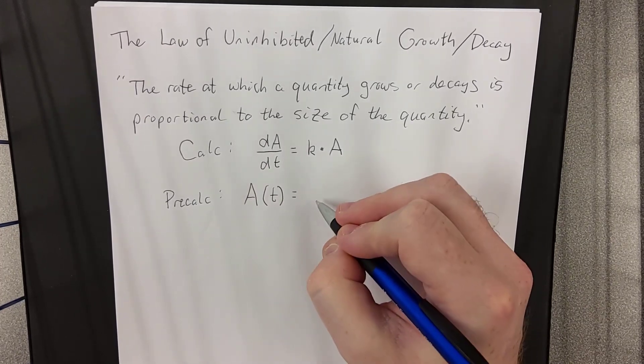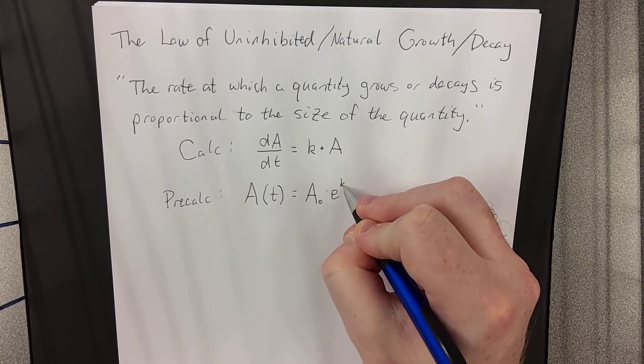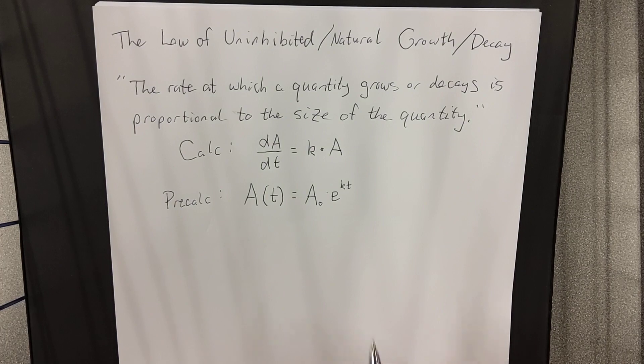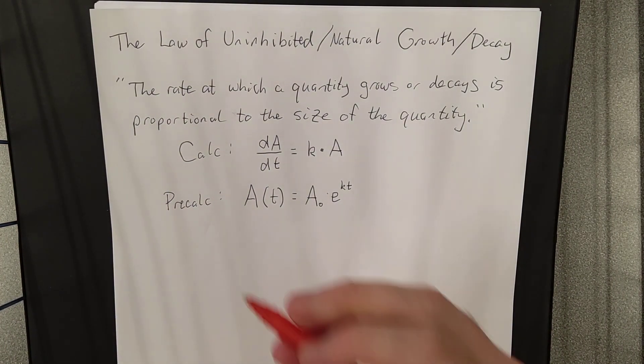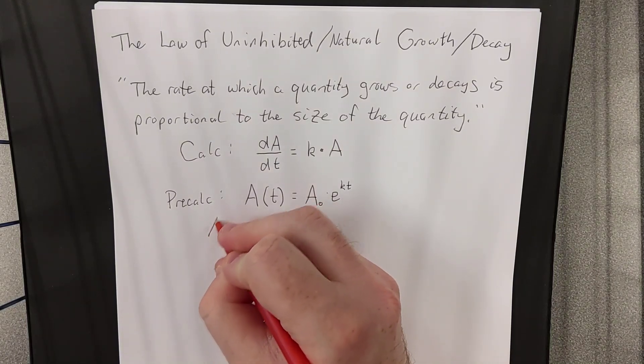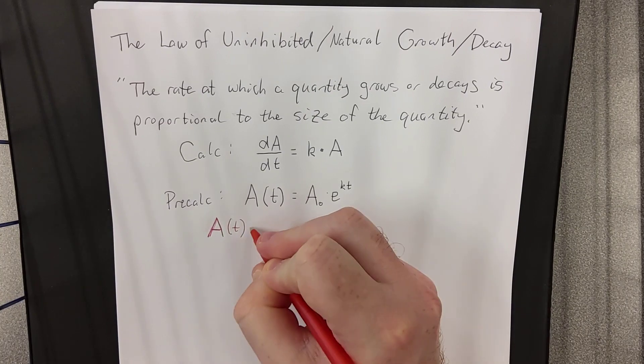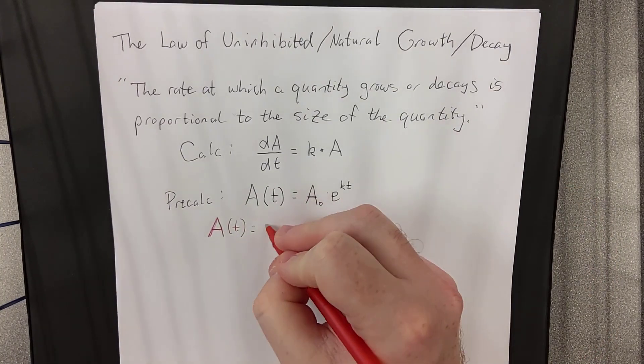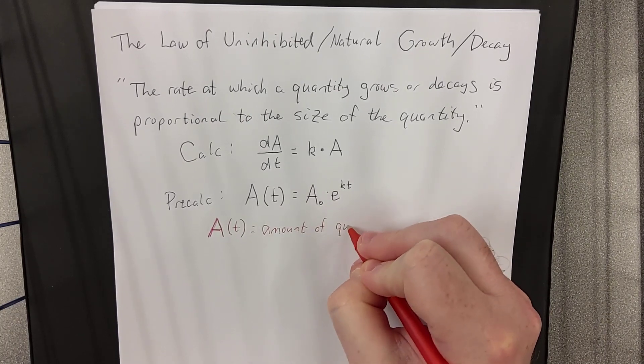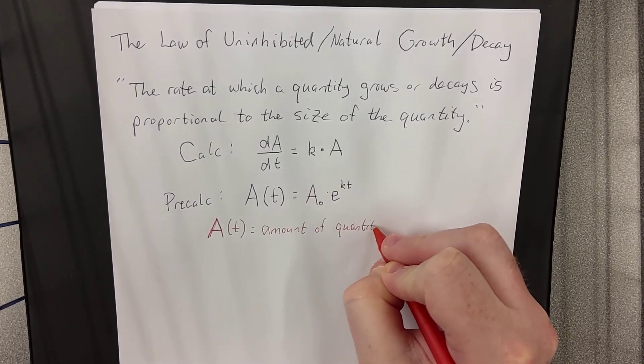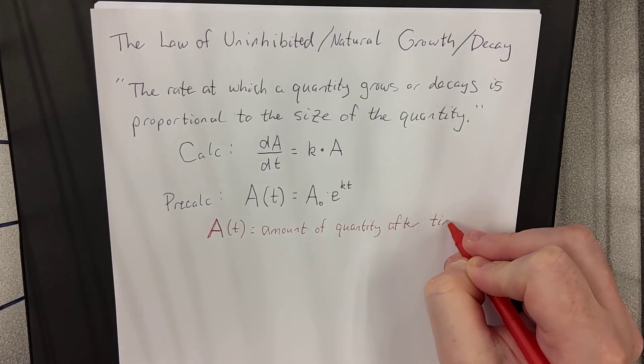A is a function of t. T represents time. And I will take a moment to define all of the quantities that are relevant to this equation right here. So, let's go ahead and define them. A, I refer to A as a function of t because A refers to the amount of the quantity in question. It's the amount of quantity after time t.